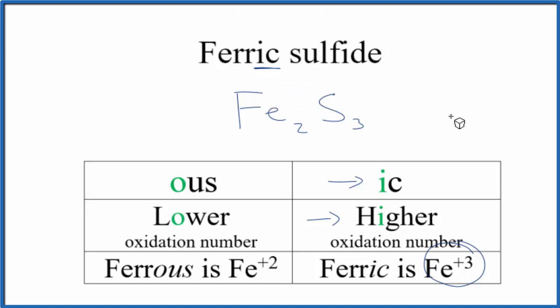We should check our work though. We said this was -2 and +3, so 2 times +3 is +6, and 3 times -2 is -6. These add up to zero - we have a net charge of zero, so this is the correct formula for ferric sulfide, also known as iron three sulfide. This is Dr. B, thanks for watching.